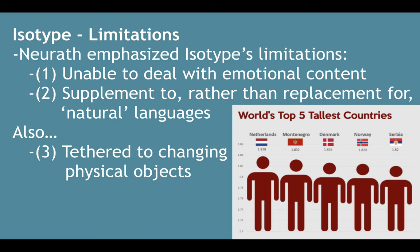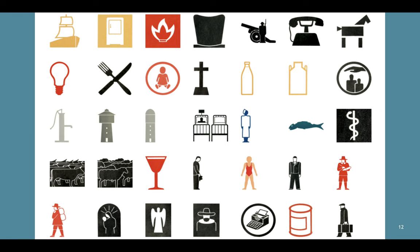Something else is that isotypes are tethered to changing physical objects. On the next slide you can see a telephone, and a typewriter. In future generations, the sign for a telephone or a typewriter — although they depicted what these were back in those times — will become less meaningful over time as phones change from rotary phones to smartphones, and typewriters give way to computers. So that's a limitation as the physical world changes.